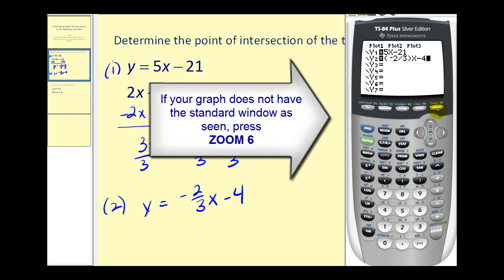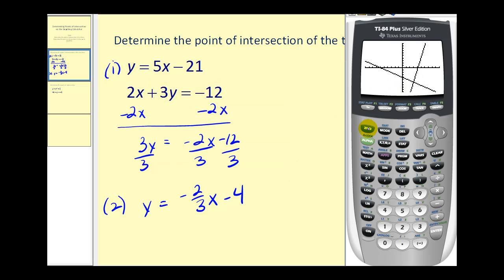Now let's press graph. If we find the point of intersection on the screen, that's good news. If we don't, we would have to adjust the window. So this is the point of intersection here. Let's press second trace, option 5.